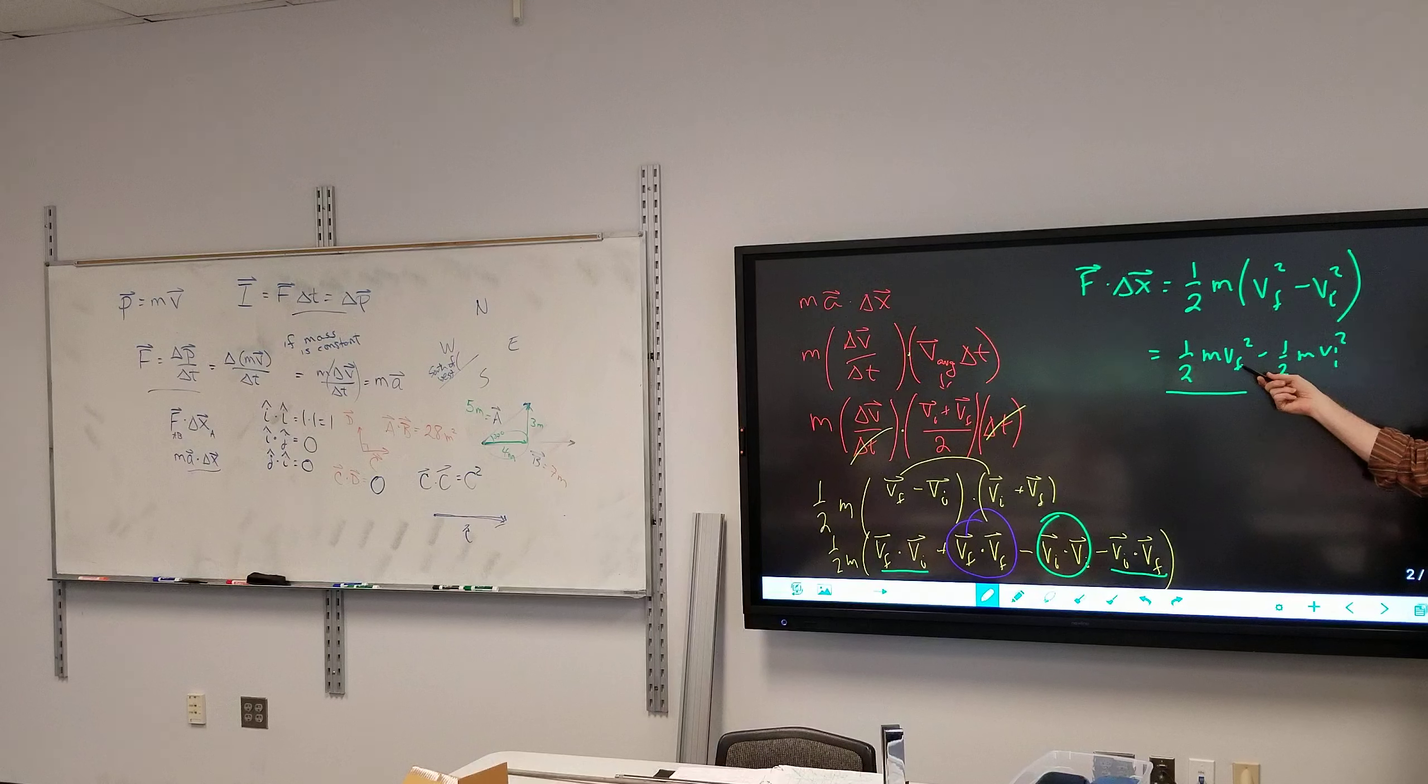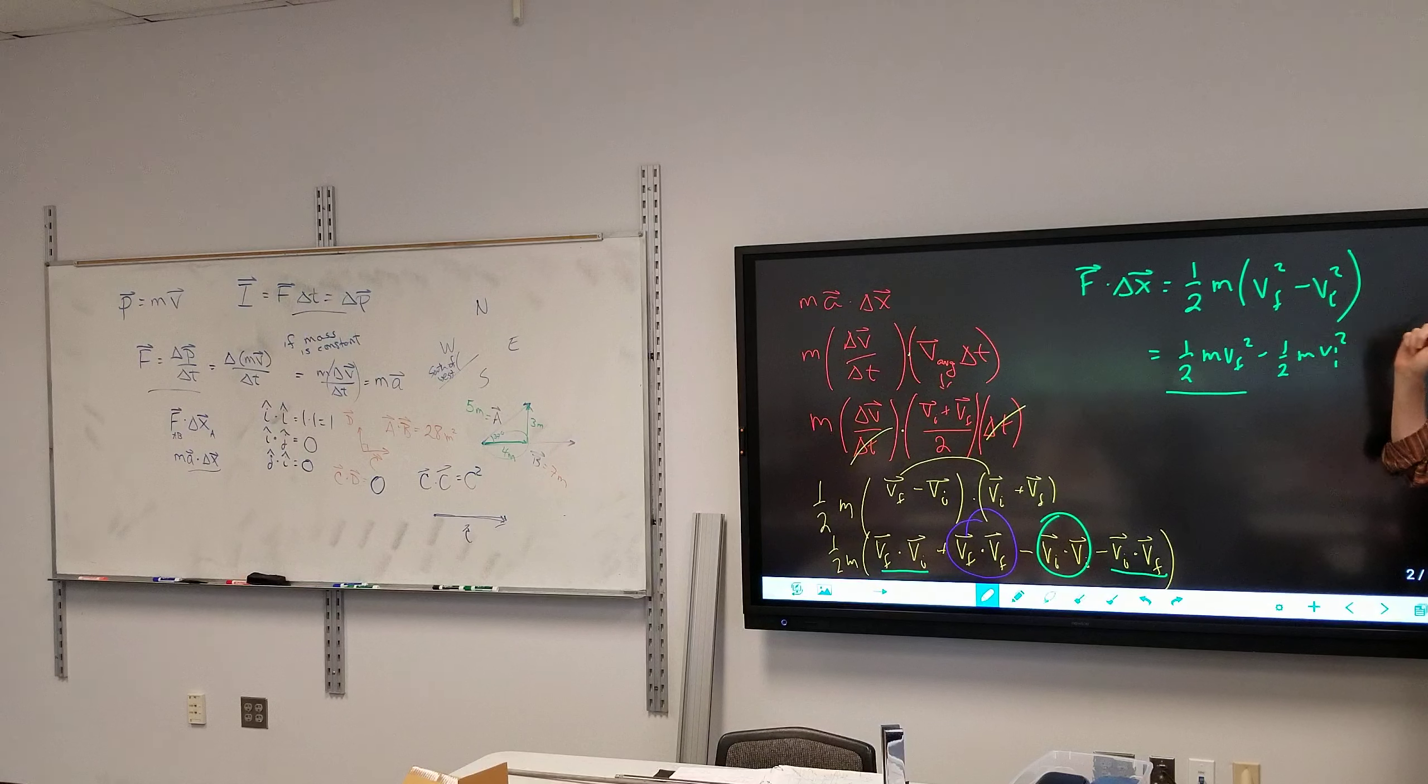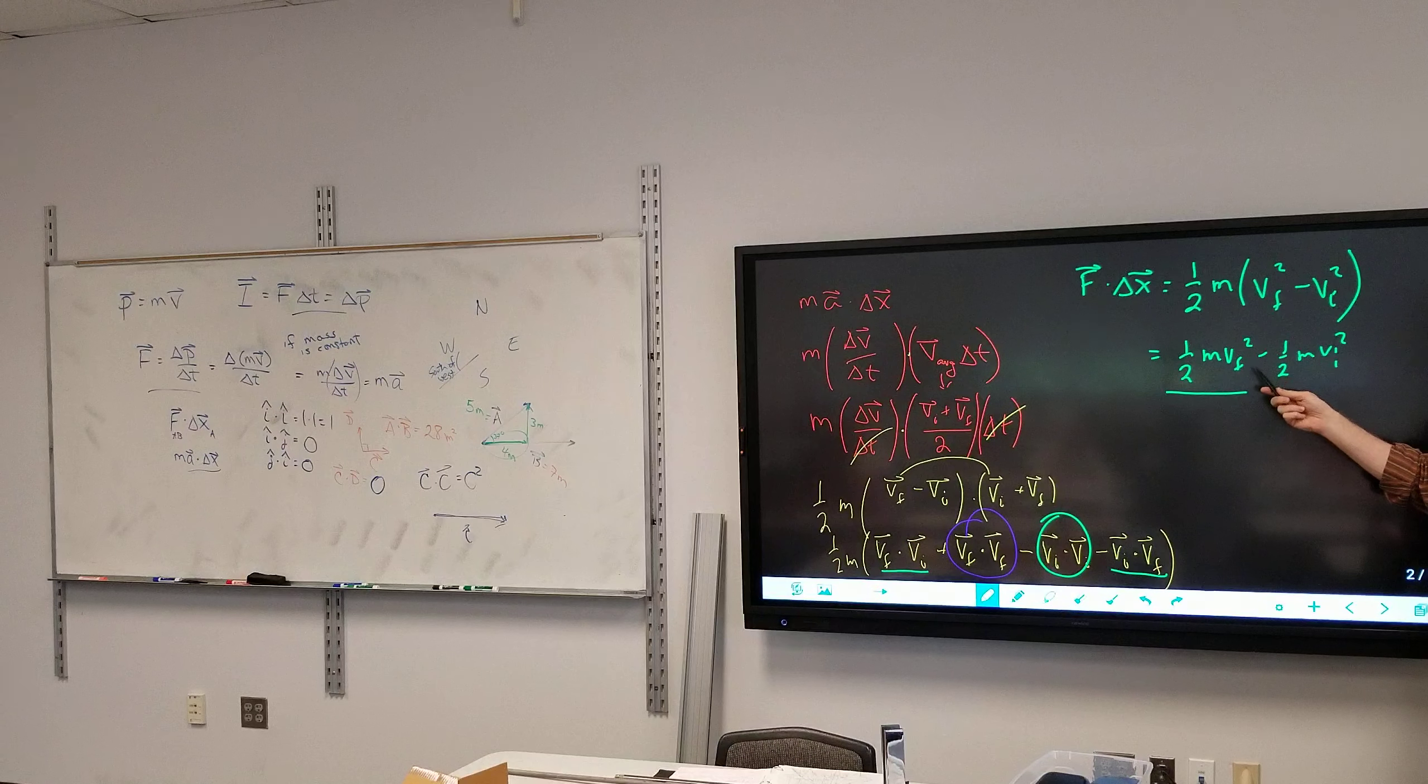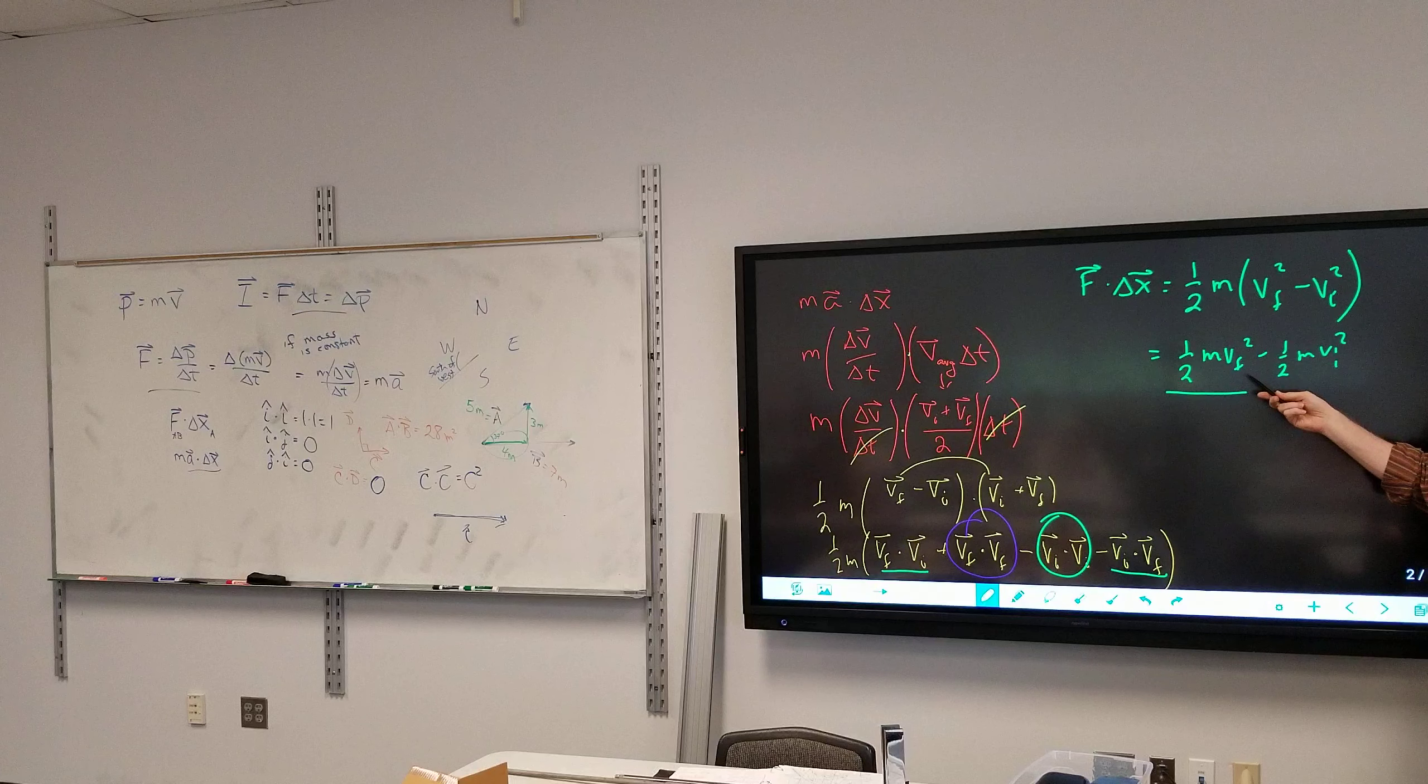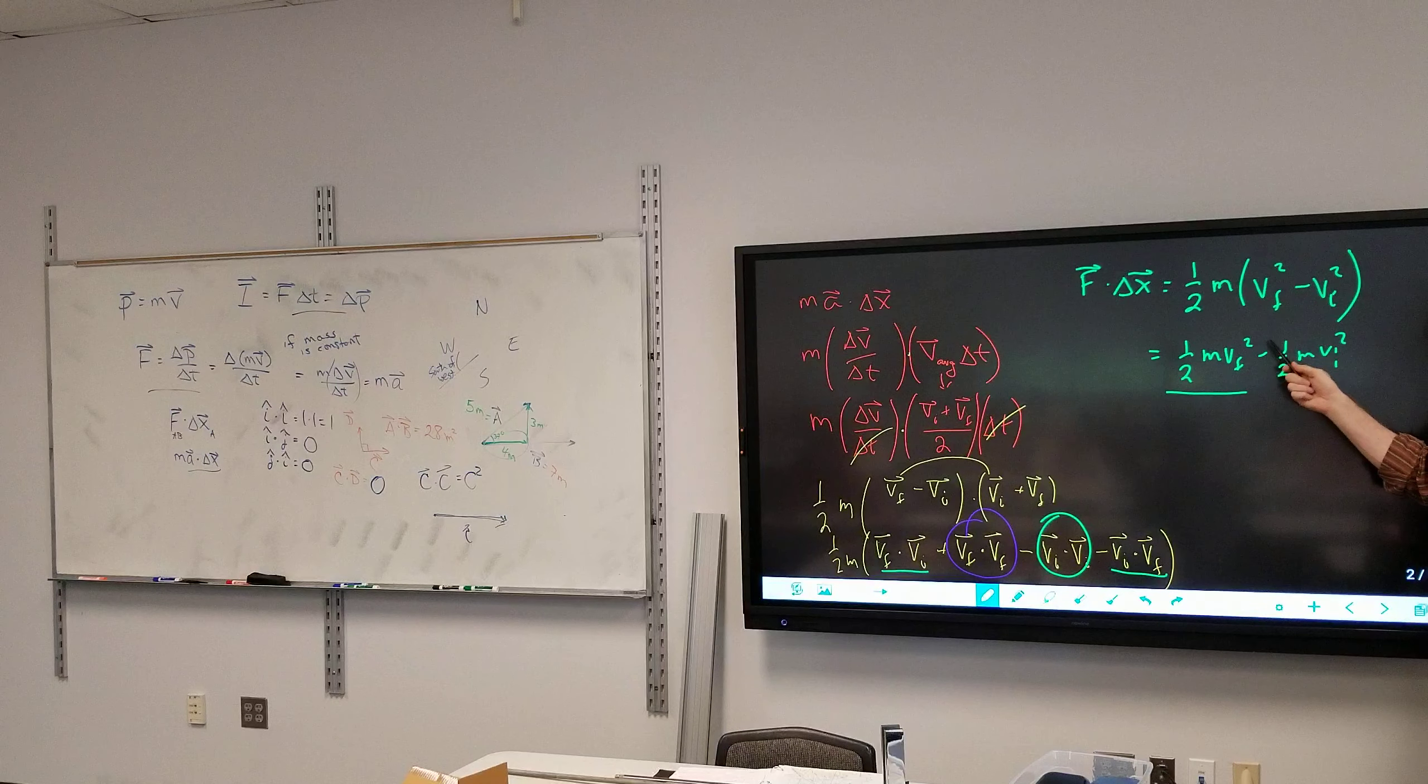All right, what does M represent? What does VF represent? Not velocity, the vector symbol's gone. There we go, it's the final speed. So if I'm multiplying, I got one half times the mass times the speed squared.